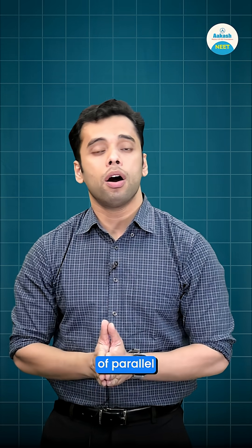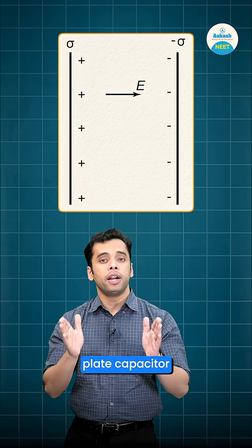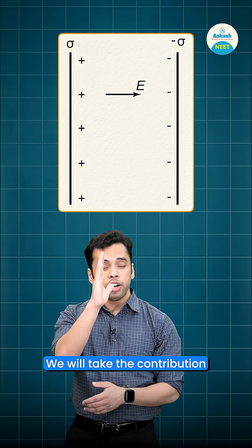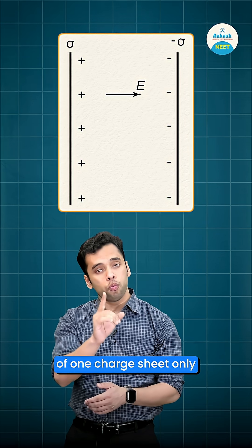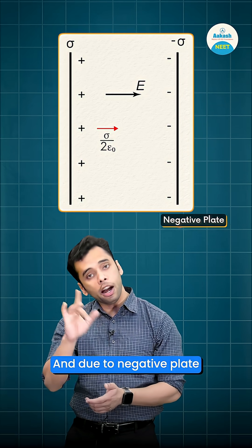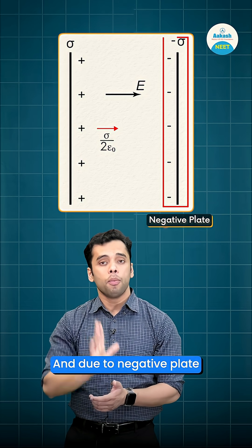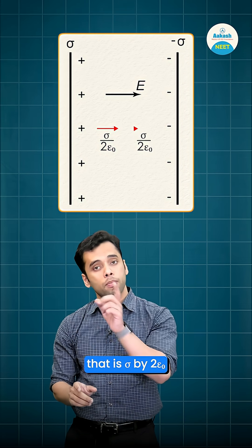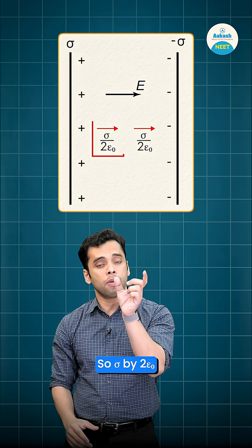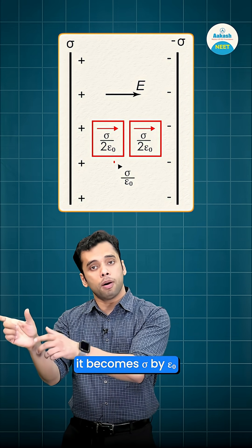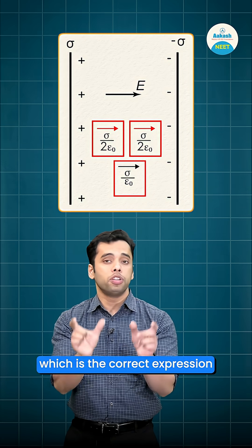Consider the plates of a parallel plate capacitor. To write the electric field due to the positive plate, we take the contribution of one charge sheet only, which is σ/2ε₀, and due to the negative plate, again we take the contribution of only one charge sheet, that is σ/2ε₀. So, σ/2ε₀ plus σ/2ε₀ gives σ/ε₀, which is the correct expression for the electric field.